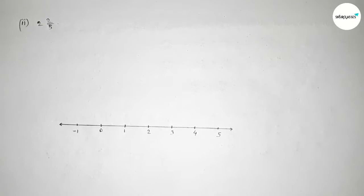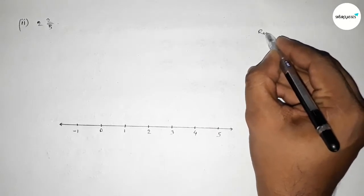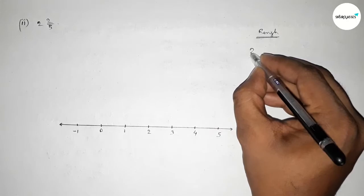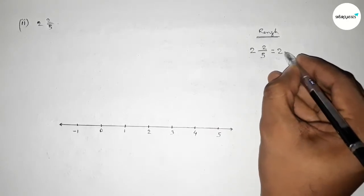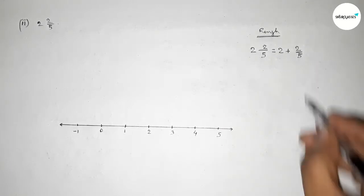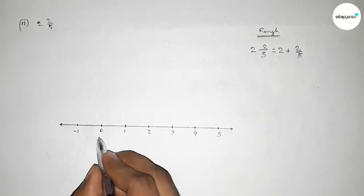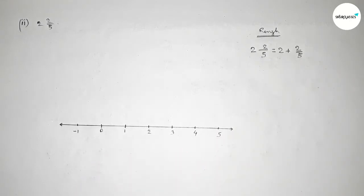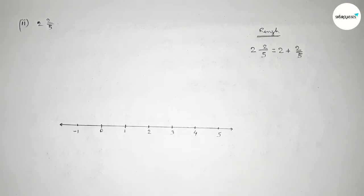I've already drawn a number line. Similarly, we can write two and two over five as two plus two over five. We have to represent mainly two over five between two and three. From zero to two, this is two units length. Now we have to divide the distance between two and three into five equal parts.